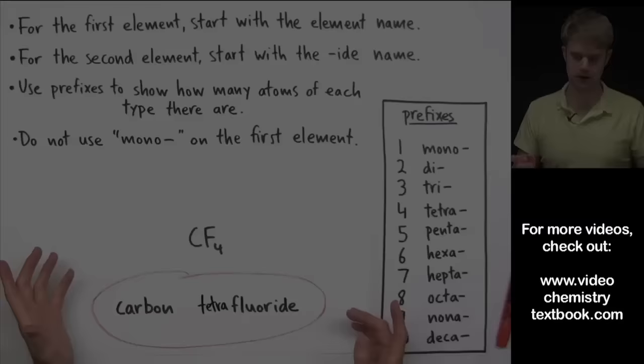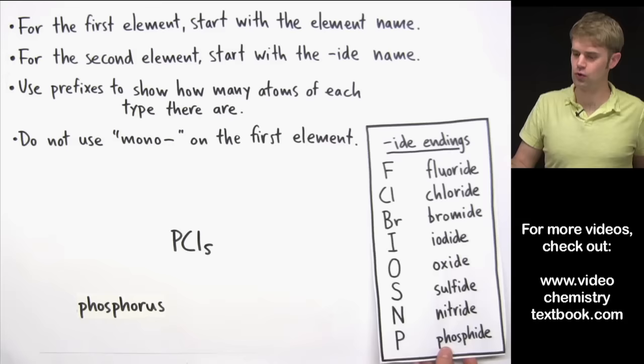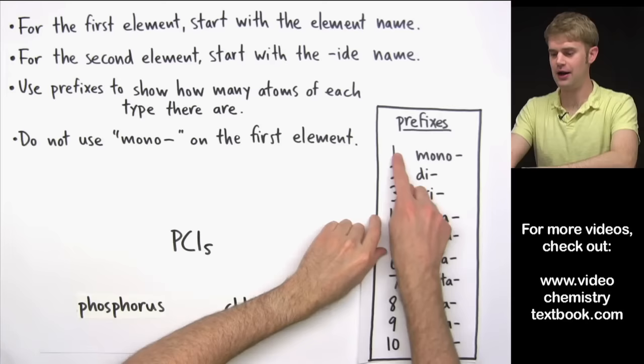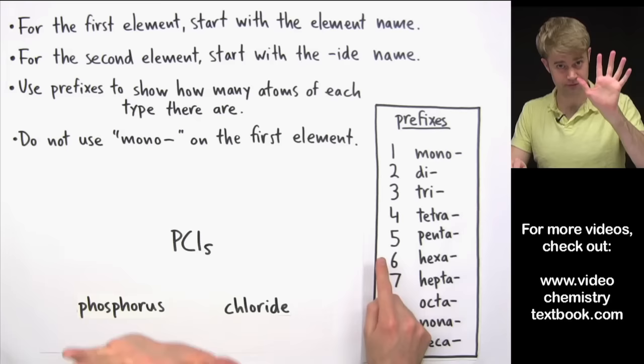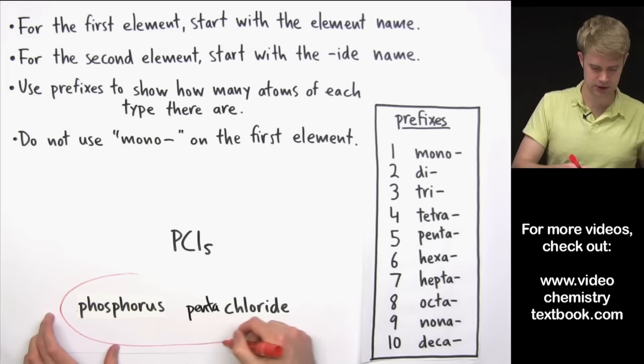PCl₅: the first element, P, is phosphorus. The second element, Cl, is chlorine, and chlorine's IDE name is chloride. For the prefixes: phosphorus has only one atom, so we don't use mono — we just keep it as phosphorus. Chlorine has five atoms, so we use 'penta' — pentachloride. The name is phosphorus pentachloride, not monophosphorus pentachloride.